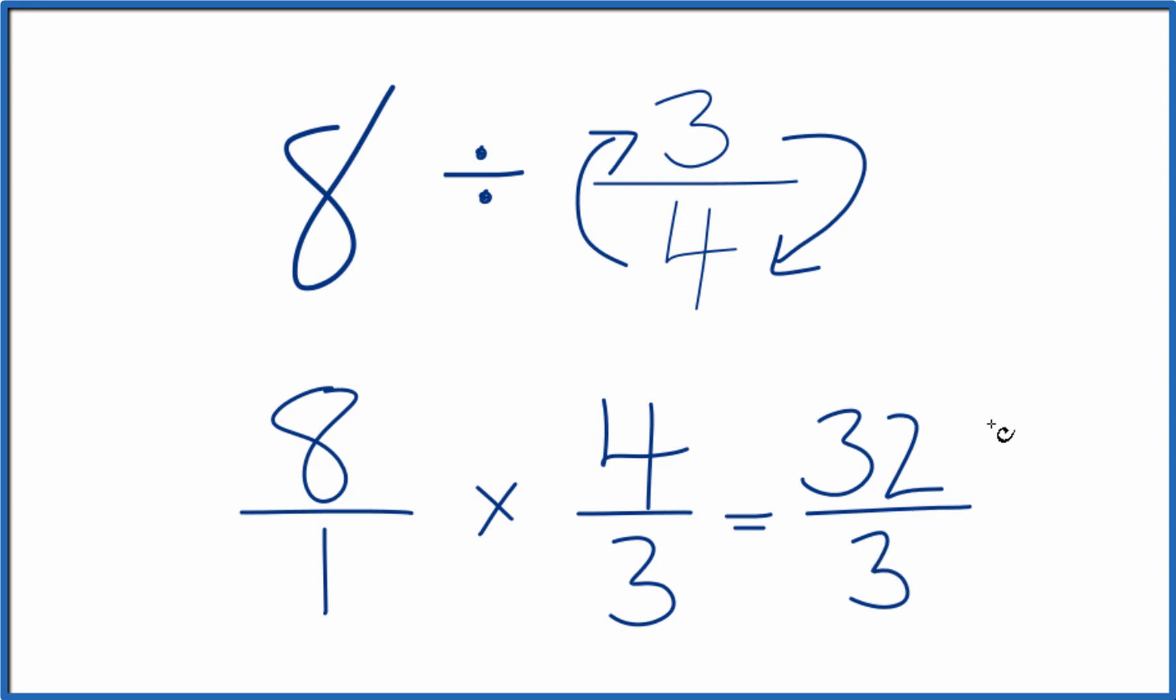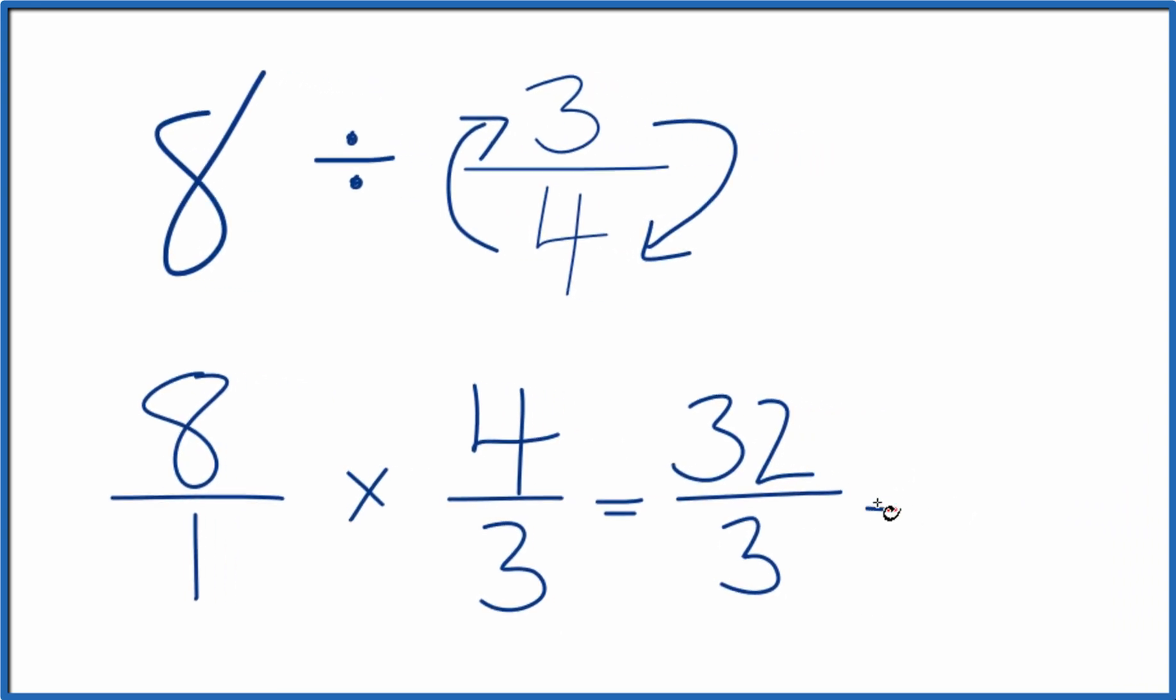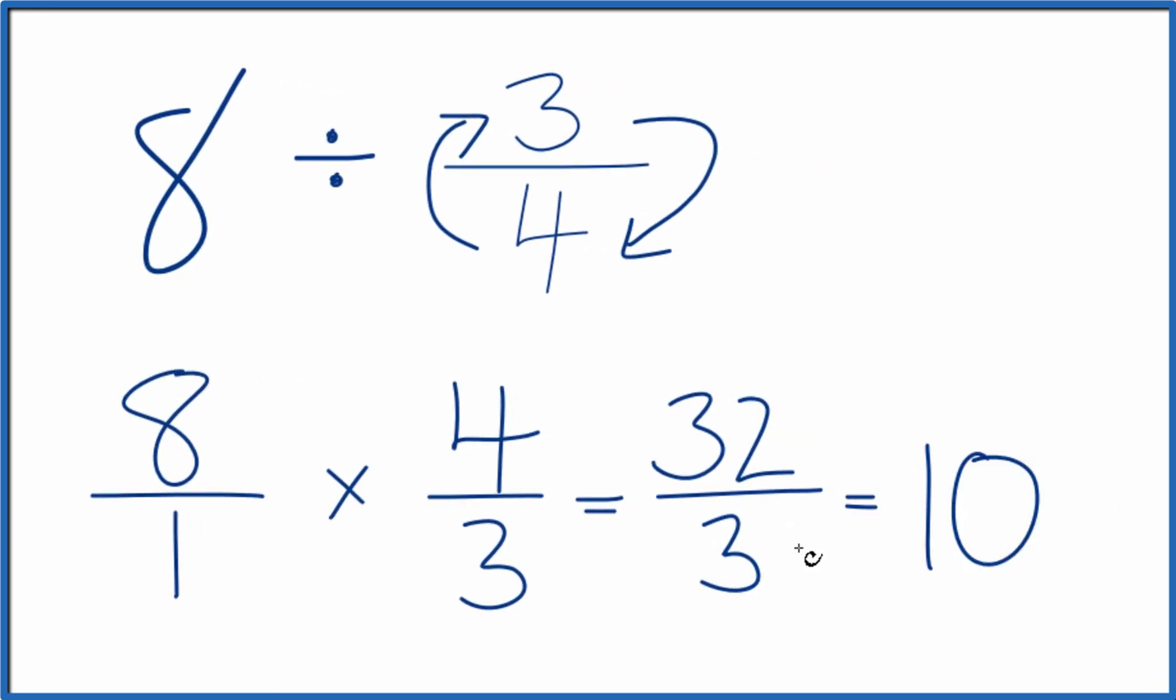So we could change this to a mixed number. 3 times 10, 3 times 10 gives us 30 with 2 left over. So we could call this 10 and 2 thirds.